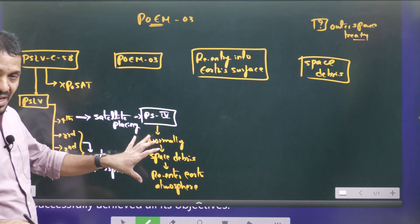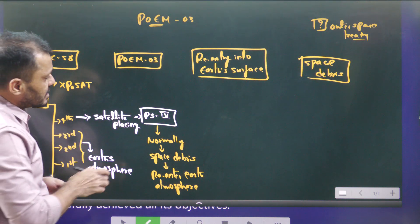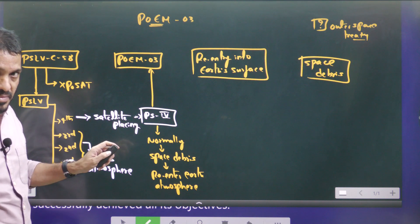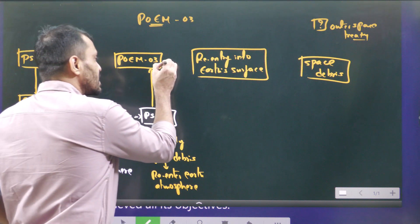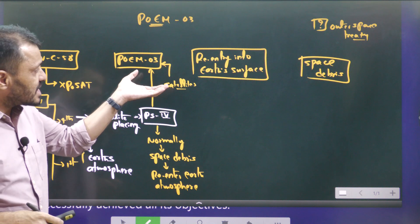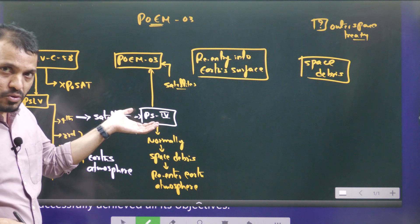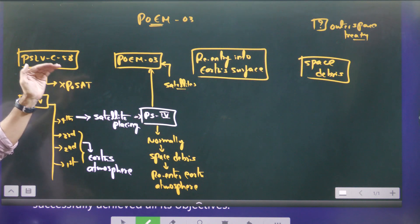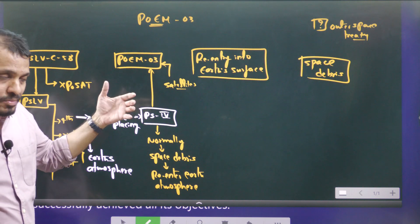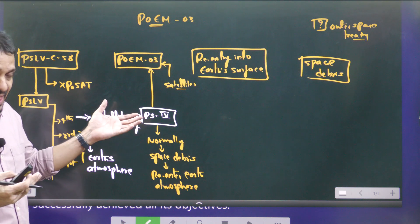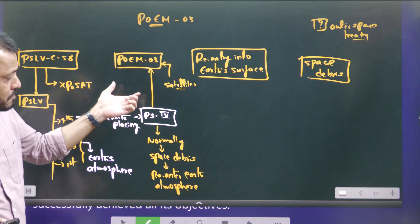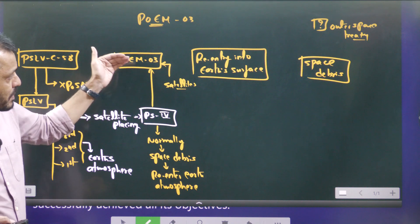But what ISRO did was add the POEM 3 — PSLV Orbital Experimental Module 3 — platform to the PS4 stage. This platform can carry satellites, but these satellites cannot detach from the platform; they remain attached to it. Once the XPoSat satellite is placed in its designated orbit, the PS4's height was lowered from around 600 kilometers to around 300 kilometers, to allow atmospheric drag to act on it more quickly.